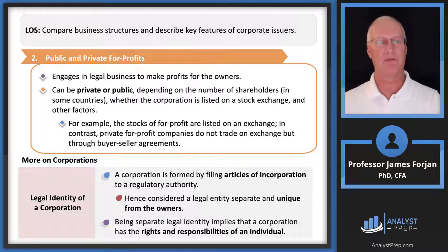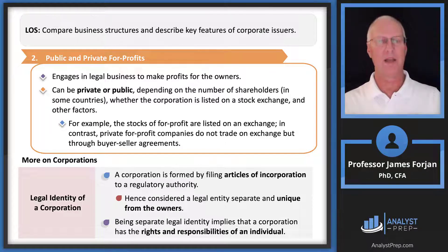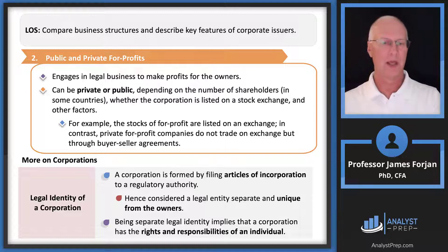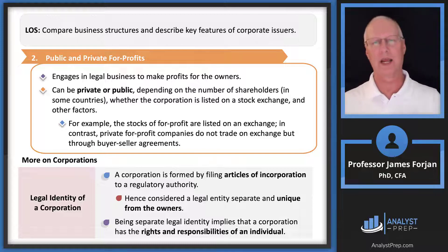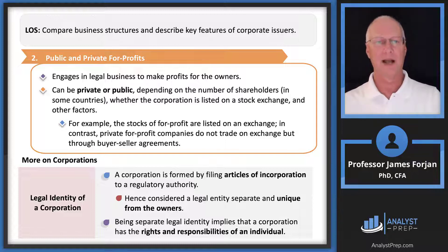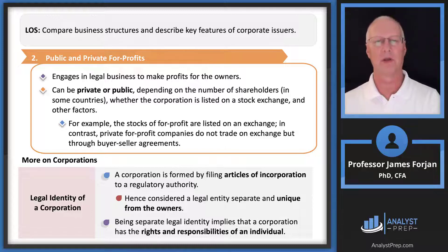For public and private for-profit companies, the equity portion of the balance sheet represents the ownership. A privately held company is often started by a founder, with family members joining over time — husbands, wives, children, grandchildren, cousins. Though private companies don't have to be family-owned, that's a useful way to think about them. The ownership can be divided in any way the founder or owners decide. A classic TV example is Ewing Oil from Dallas — a family-owned private company.